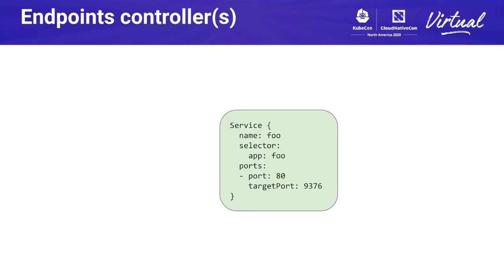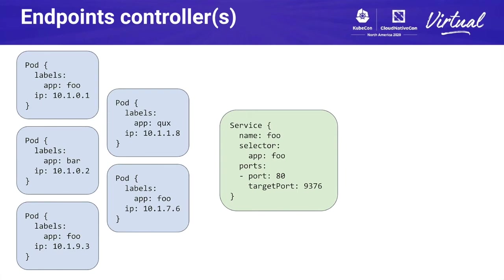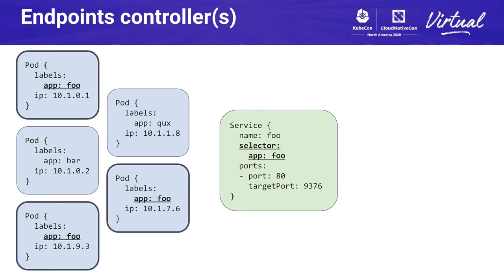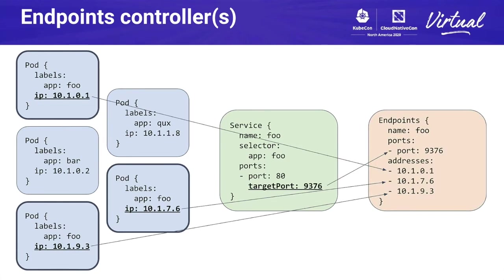Let's look at what an endpoints controller does. Given a service named foo with selector app=foo, port 80, and target port 9376, and a bunch of pods floating around — some with app=foo, some with app=bar, some with app=quux — the service will only select the pods that have app=foo. The endpoints controller then takes the matching pods and puts them in the endpoints object. The endpoints object doesn't contain all the information about the pods; it only contains the endpoints information, which is basically the IP.